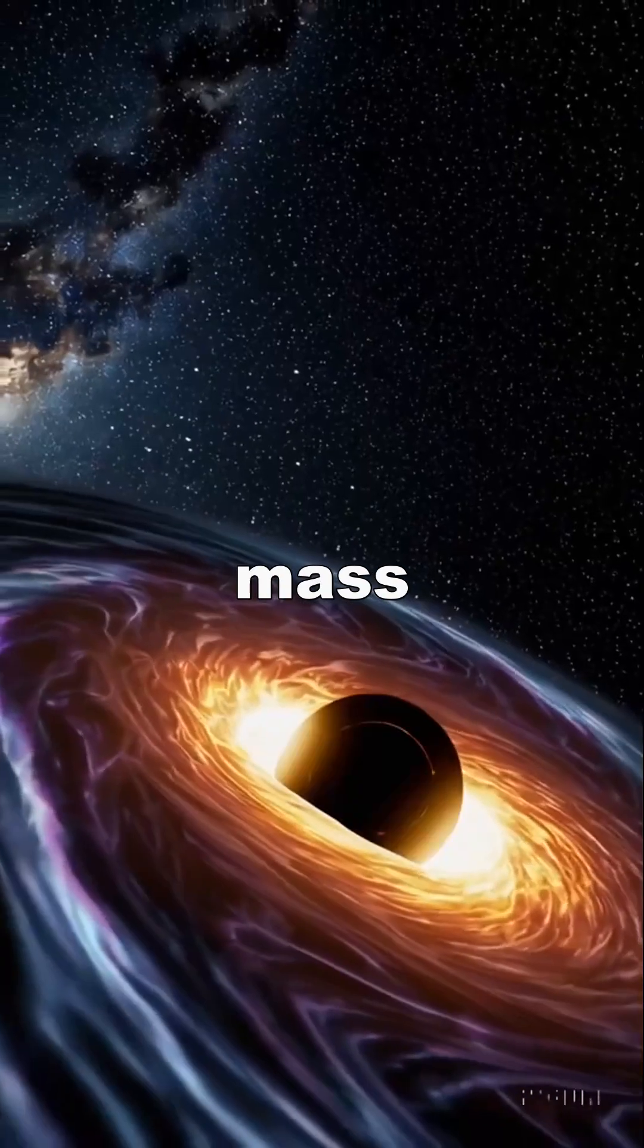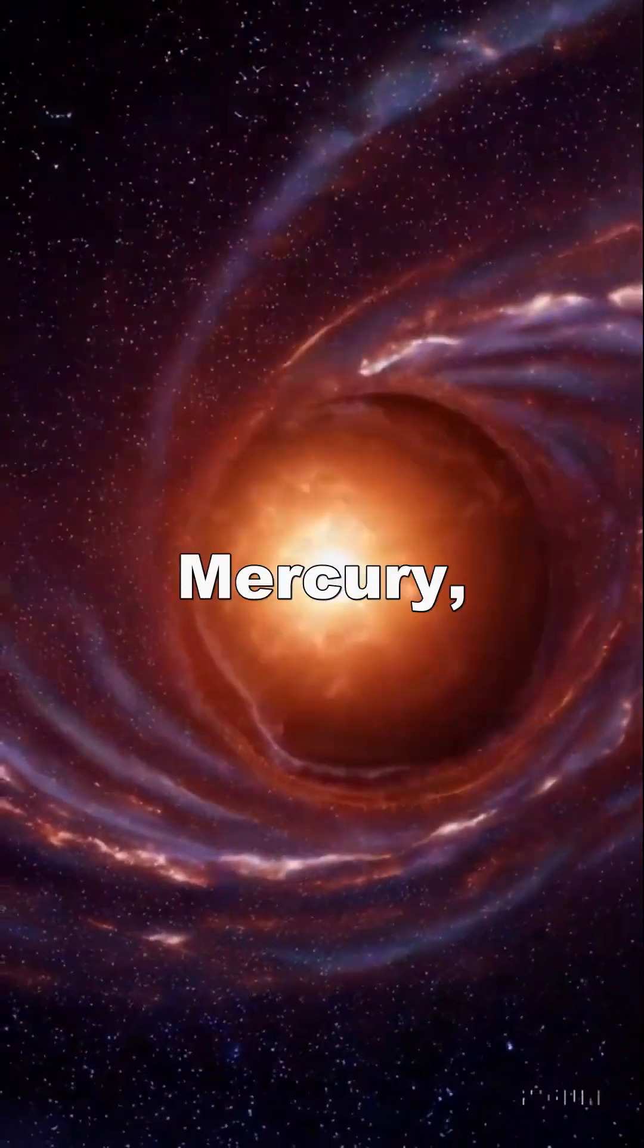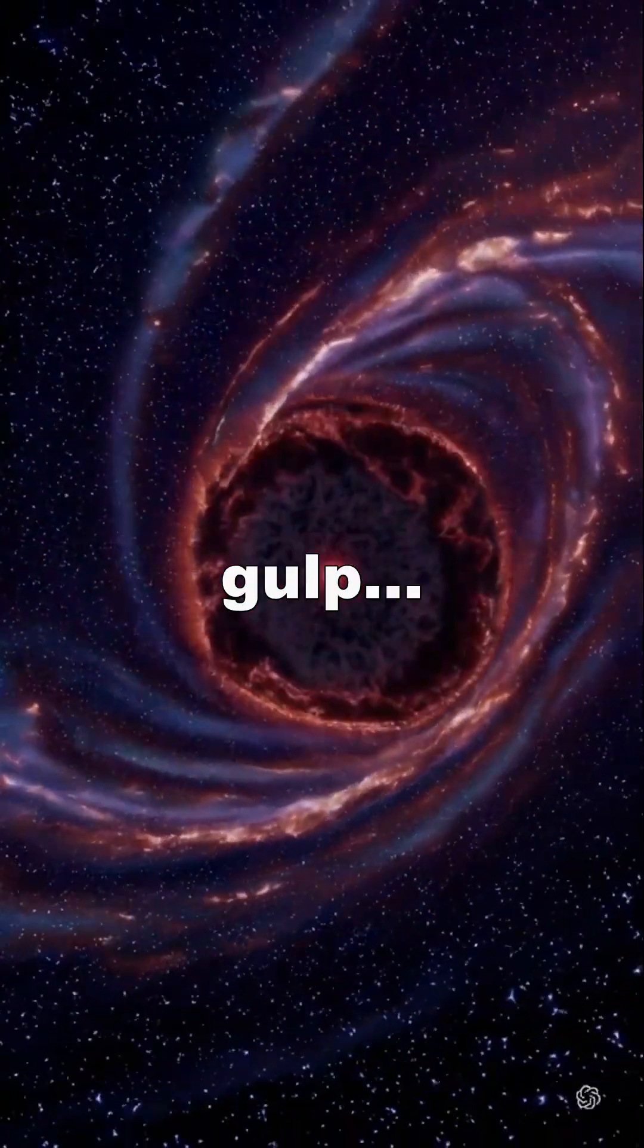It has the mass of 66 billion suns. If it were in our solar system, it would swallow Mercury, Venus, Earth, Mars, and Jupiter in one gulp and still have room for Saturn.